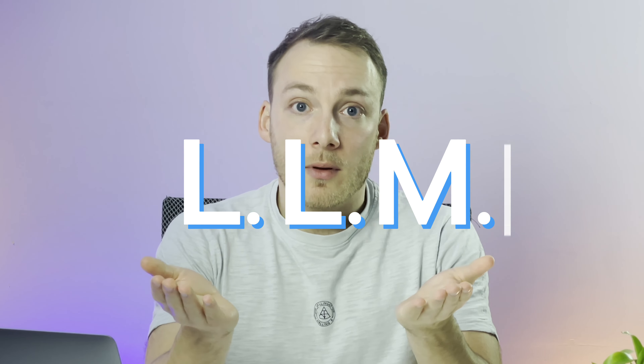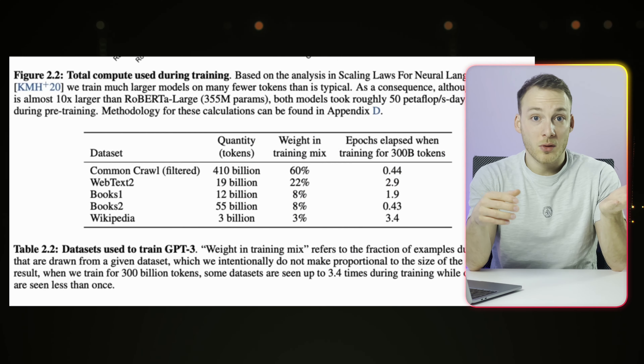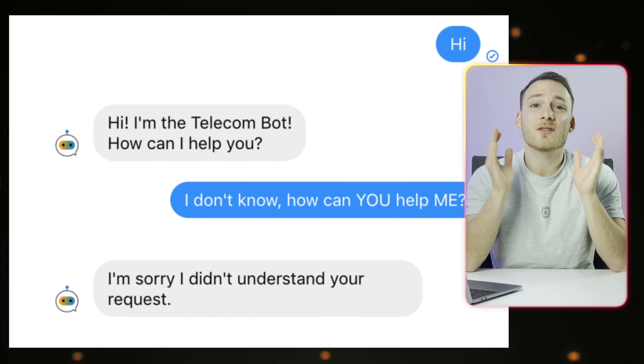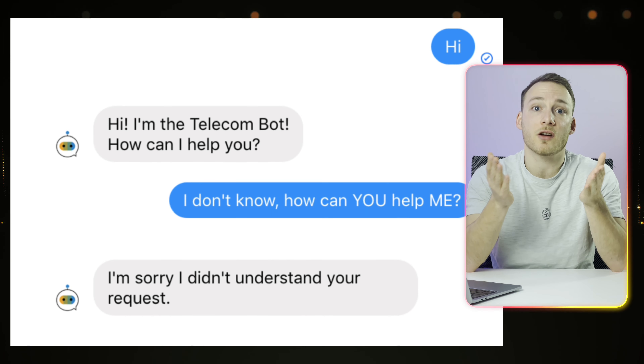How can ChatGPT answer all these questions? ChatGPT is a large language model, or LLM, which is trained on all sorts of data — for example travel blogs, Wikipedia articles, scientific papers, and much more. During its training process it learned how to generate text that is both relevant and coherent. As a result it can now answer questions based on topics it hasn't been specifically trained on — it will simply predict what the answer will be based on the large dataset it has. This is very different from traditional chatbots that look for a specific keyword in your question and go through a list of pre-programmed answers.